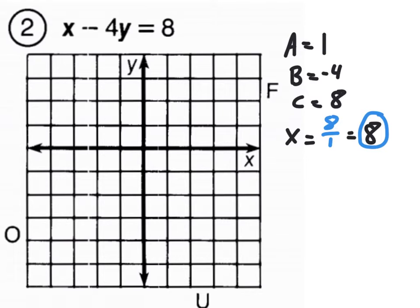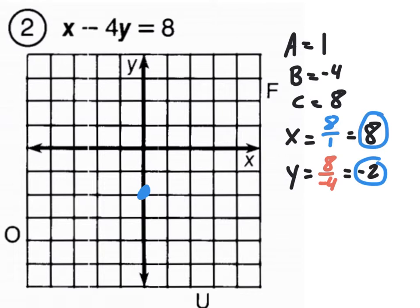The x-intercept is c divided by a, which is eight over one, which is eight. That's my x-intercept, but here's the problem: x only goes to about five on the grid, so that dot is not on the grid. We won't panic yet. Let's do the y-intercept and see if that one shows up. The y-intercept is c over b, which is eight over negative four, giving us negative two. That one is on the grid.